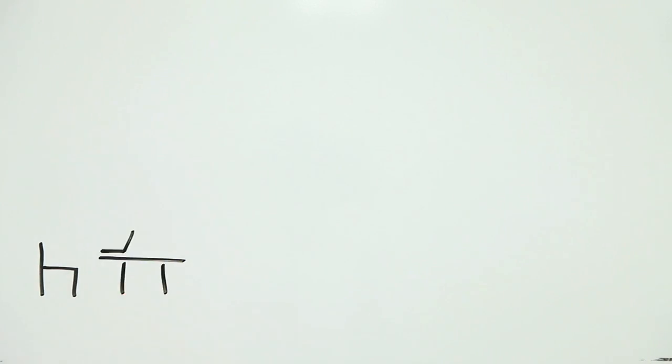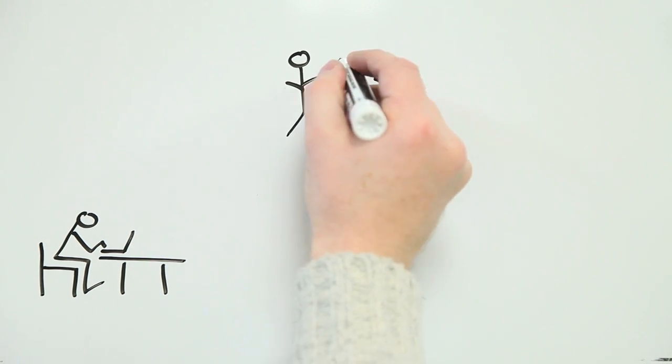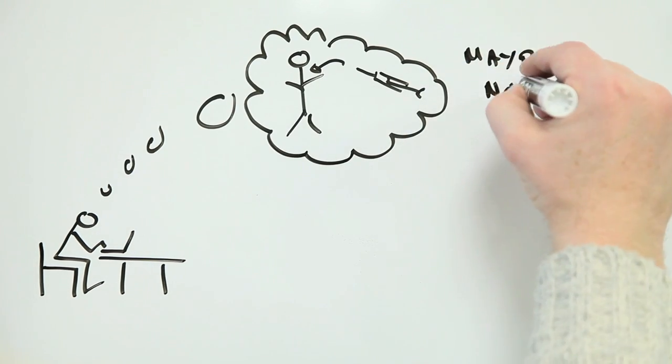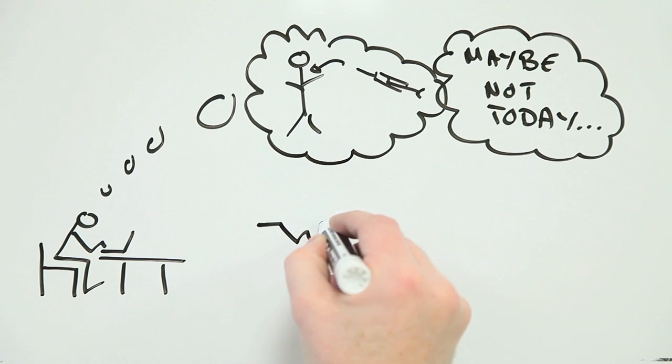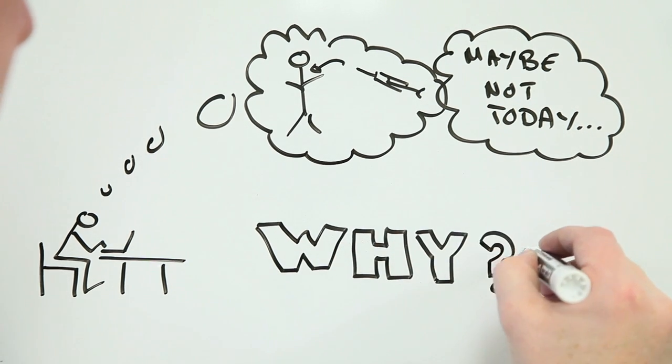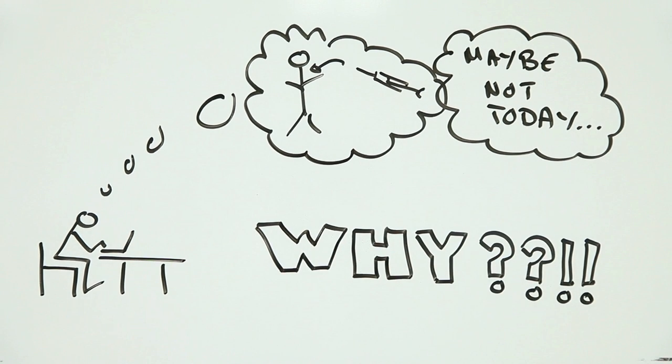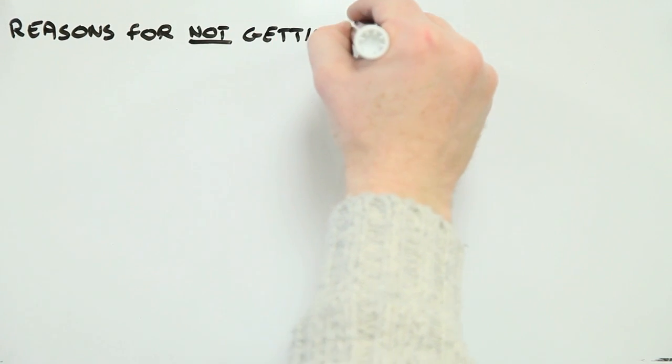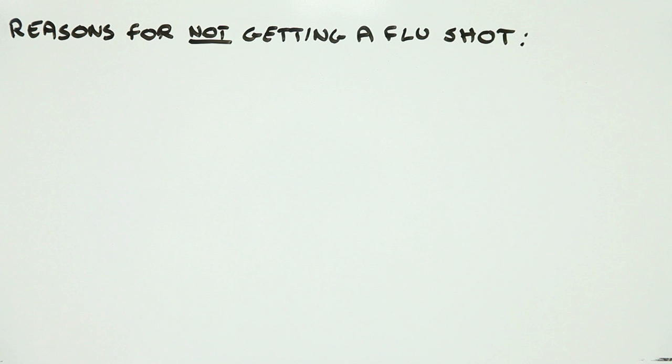Why do I find it so easy to do nothing when all the advice is to just go out and get a shot? It's not as if I'm worried about the risk of complications. This is pretty insignificant for someone like me. But like many, my default position is to sit on my backside and do nothing until I need to.